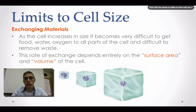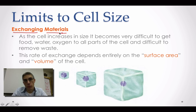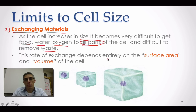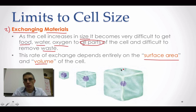In addition to DNA overload, we also need to understand that if a cell gets too large, it's going to have a really difficult time exchanging materials with the environment. That's our second limit to cell size. As the cell increases in size, it becomes very difficult to get things like food, water, and oxygen to all parts of the cell. It also becomes more difficult to remove waste. This rate of exchange depends on the surface area and the volume of the cell. The surface area is everything on the outside of the cell, and the volume is the amount of space taken up by the inside.